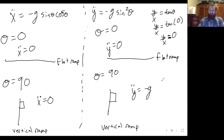It might seem complicated to apply the Lagrangian formulation to a block on a ramp, and even more so using constraints and Lagrange multipliers. But this was a simple example we've solved before so you can see how the new methods work. Now we have two ways to approach problems using constraints: plug them directly into the Lagrangian, or use them to set up Lagrange multipliers. This has been a Dr. Straussbaum lecture—don't forget to like, subscribe, and ring the bell for notifications.